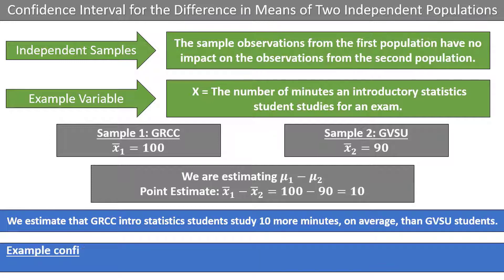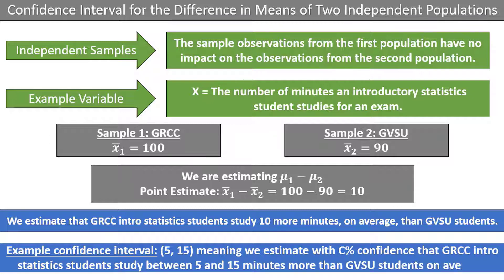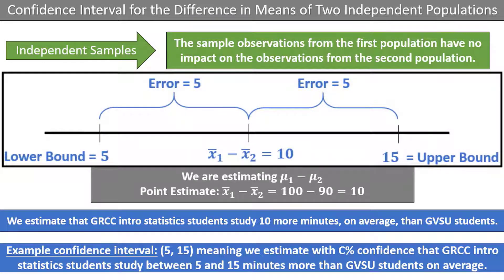An example confidence interval might be (5, 15), meaning that we estimate with C% confidence that GRCC intro statistics students study between 5 and 15 minutes more than GVSU students on average. On a number line, the confidence interval would look something like this. The point estimate of x-bar1 minus x-bar2 is in the middle, and is 10.